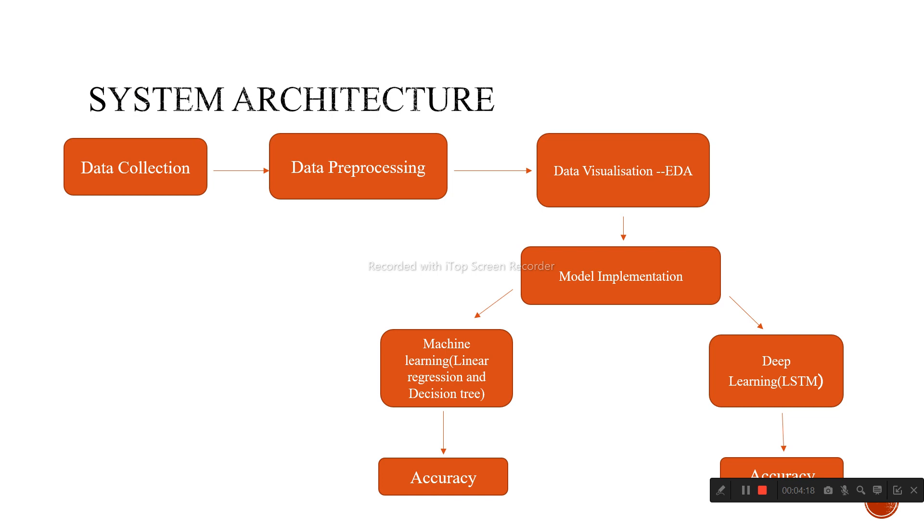The system architecture is shown here. First, data is collected and presented in tabular form, then the data is pre-processed using sklearn package. Data visualization allows you to look at data and get to know the variables and relationships between them. The model is implemented using machine learning or deep learning methods and is used for accurate prediction.